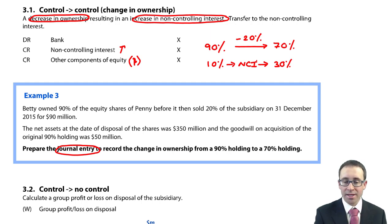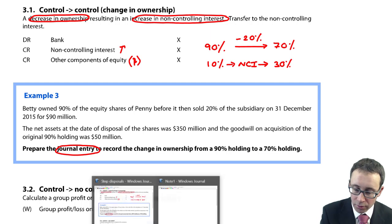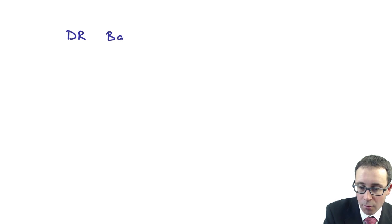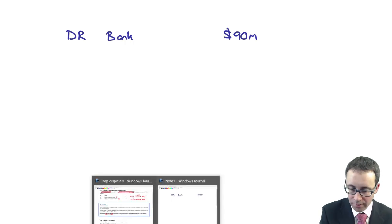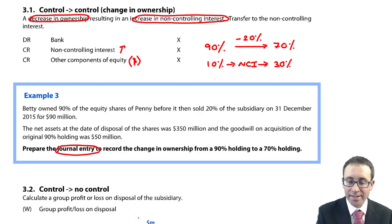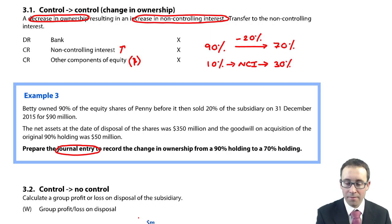So it says Betty owned 90% of the equity shares of Penny before it then sold 20% of the subsidiary on December for 90 million. So we're going to debit the bank first of all with 90 million — that's nice and straightforward.